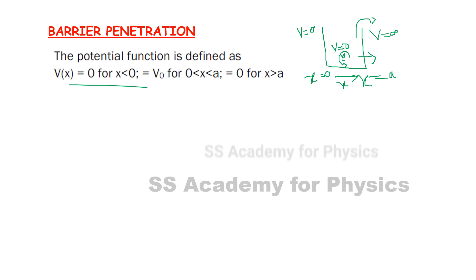So V(x) is V₀ for x less than zero, V(x) equals zero for zero less than x less than a, and for x greater than a, this is the barrier.